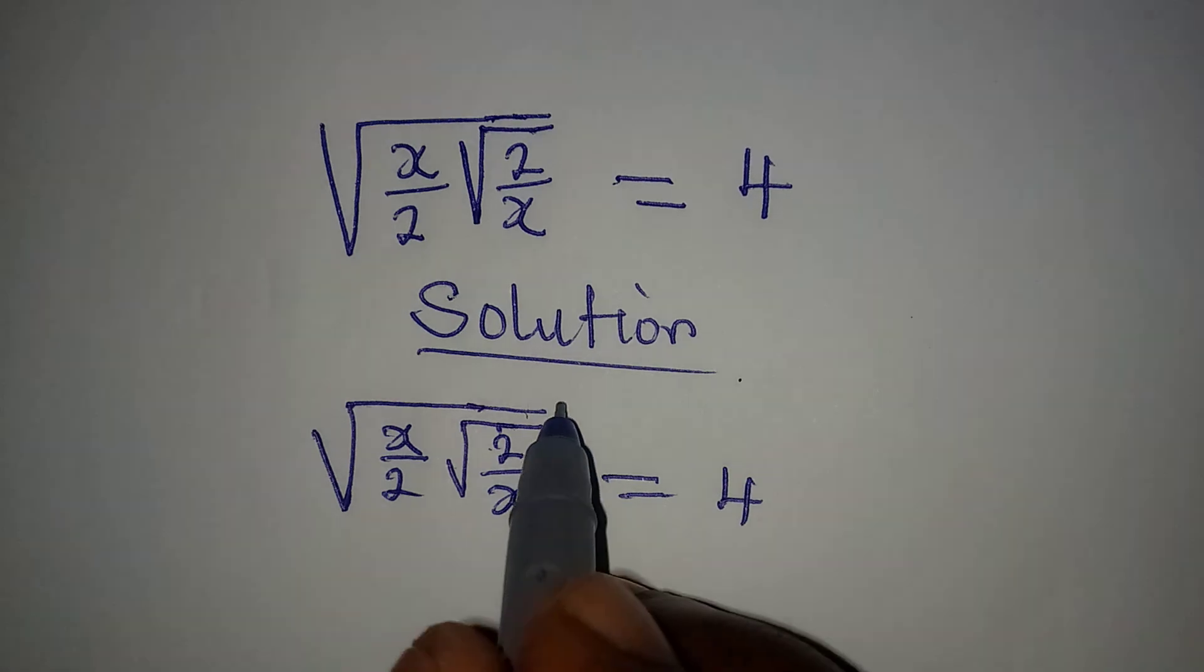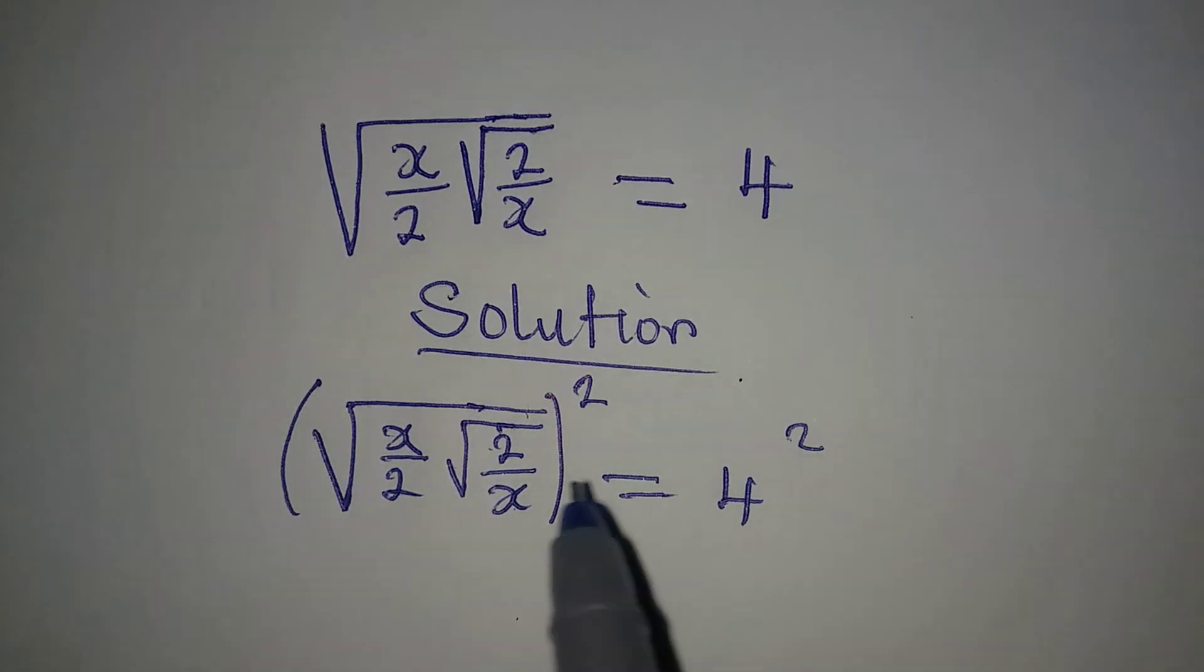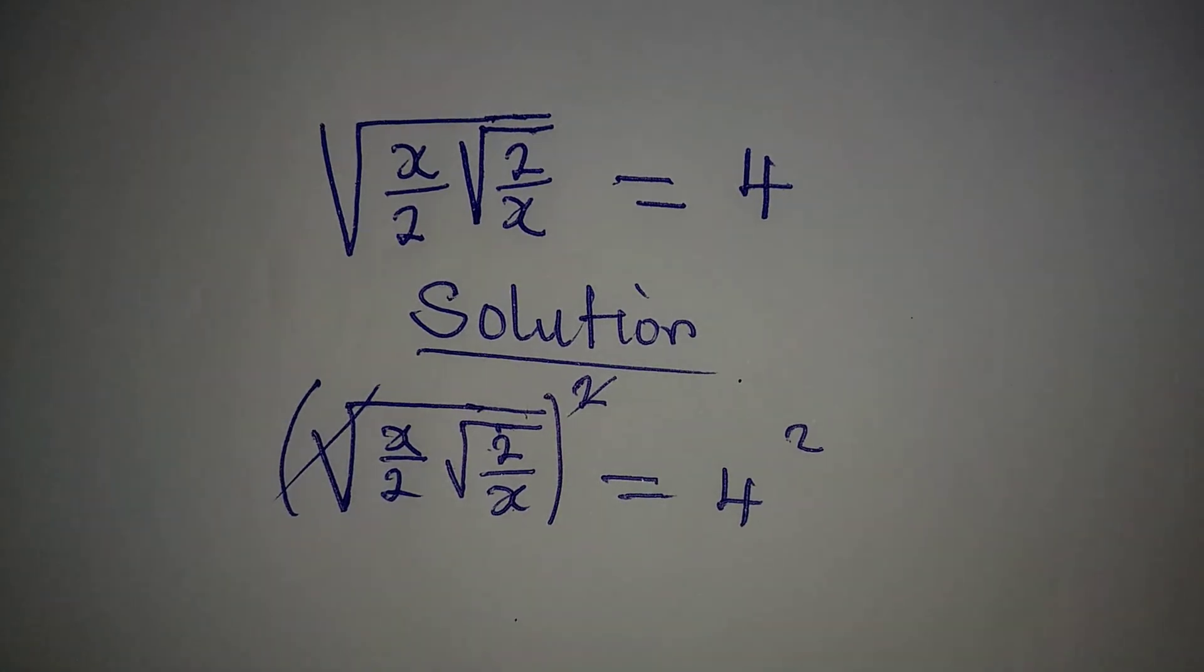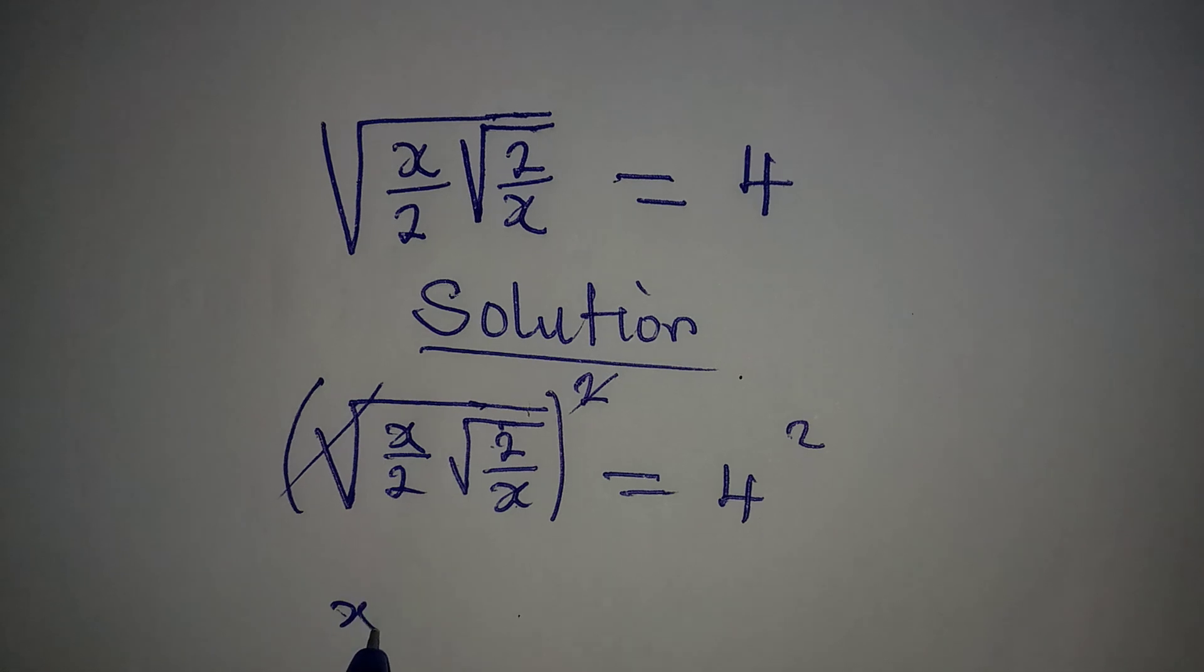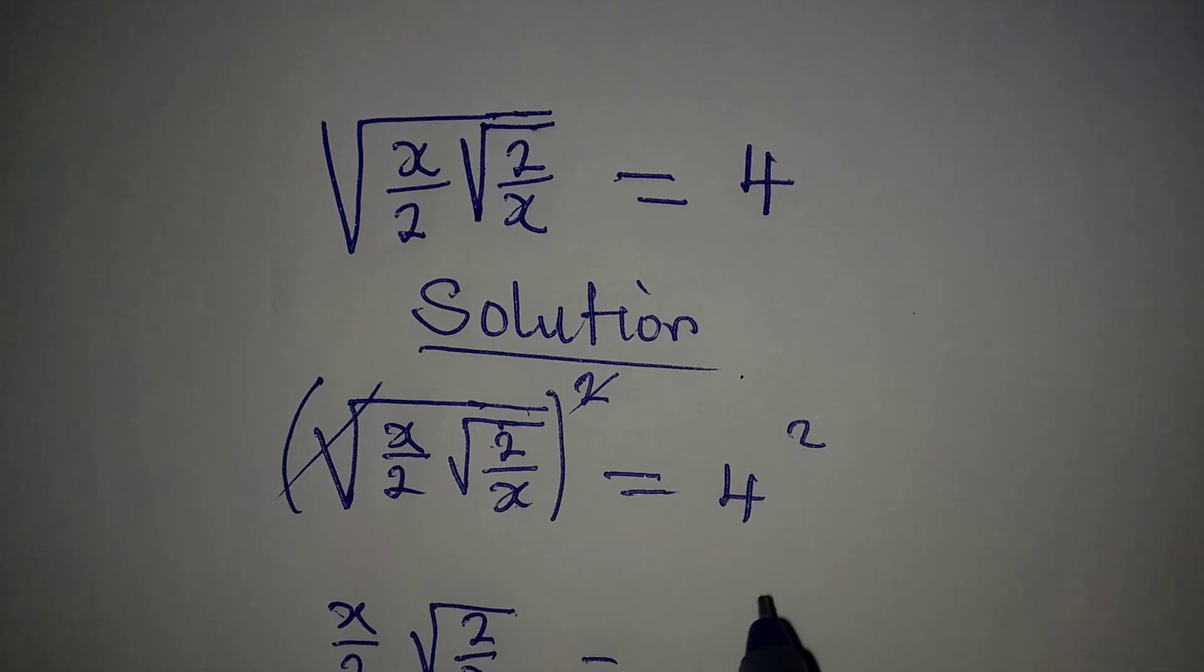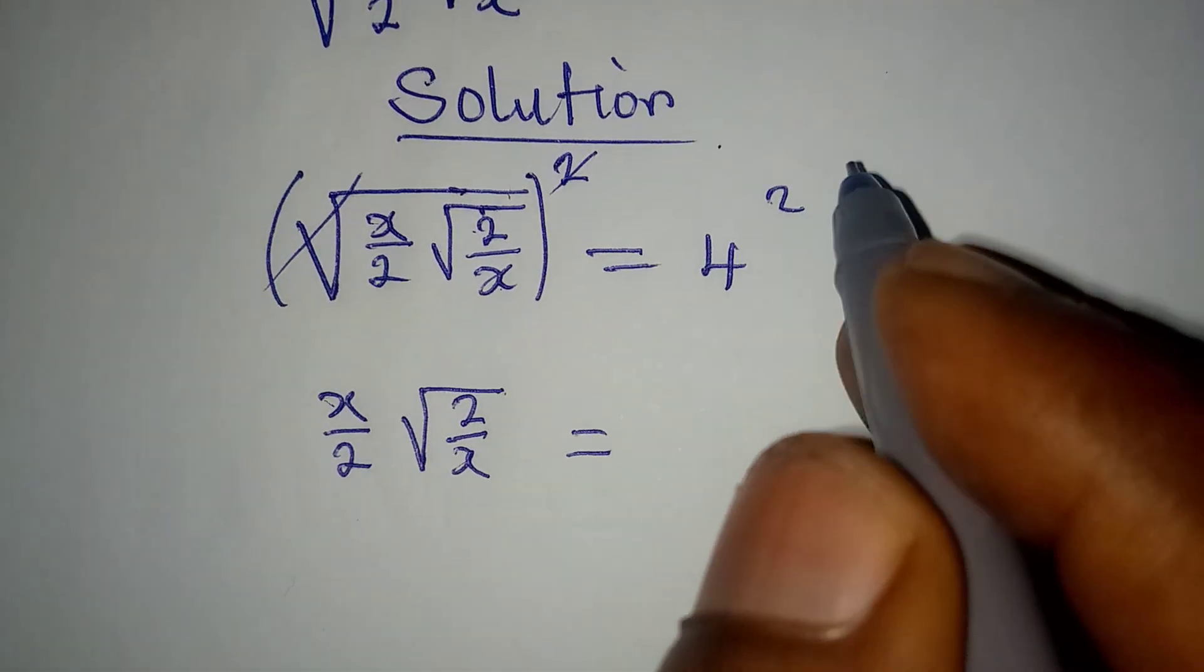So the first thing you do is square both sides so that this will be gone with this one. Then we have x over 2 times square root of 2 over x to be equal to 4 times 4, and that will give 16.